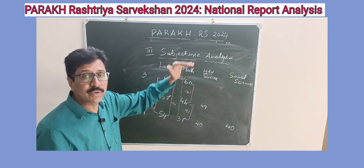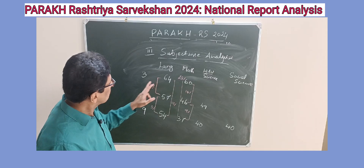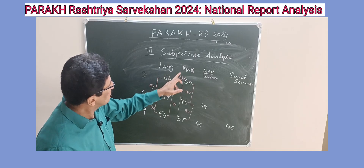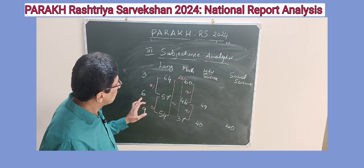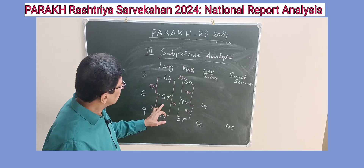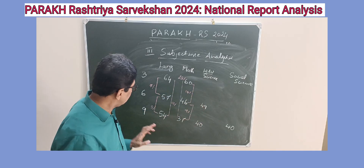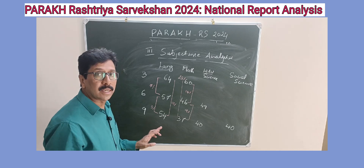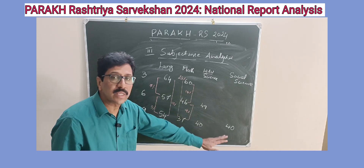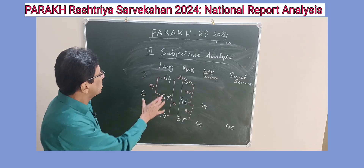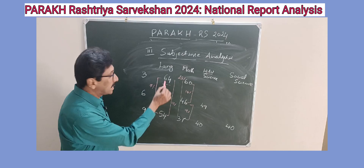This is a national level, subject-wise and class-wise analysis of performance across the country. In third standard, only language and mathematics were assessed. In sixth standard, language, mathematics, and World Around Us were assessed. In ninth standard, four subjects were assessed: language, mathematics, science, and social science. In third standard, the overall performance was 64 percent.